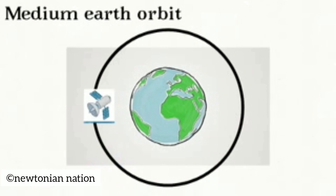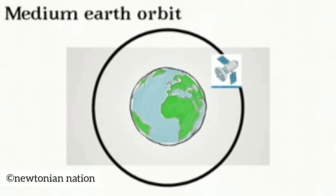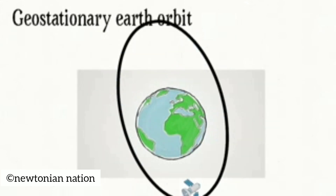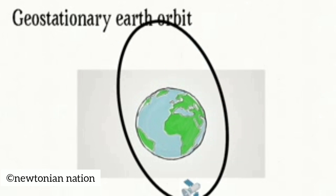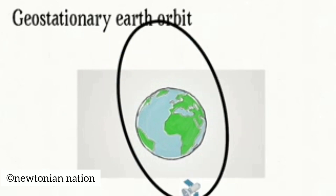Medium Earth Orbit lies between 2000 to 35,786 km, and it takes approximately 2 to 26 hours to circle the earth. Geostationary Earth Orbit lies exactly at 35,786 km; it is elliptical in shape and takes approximately 24 hours to circle the earth.